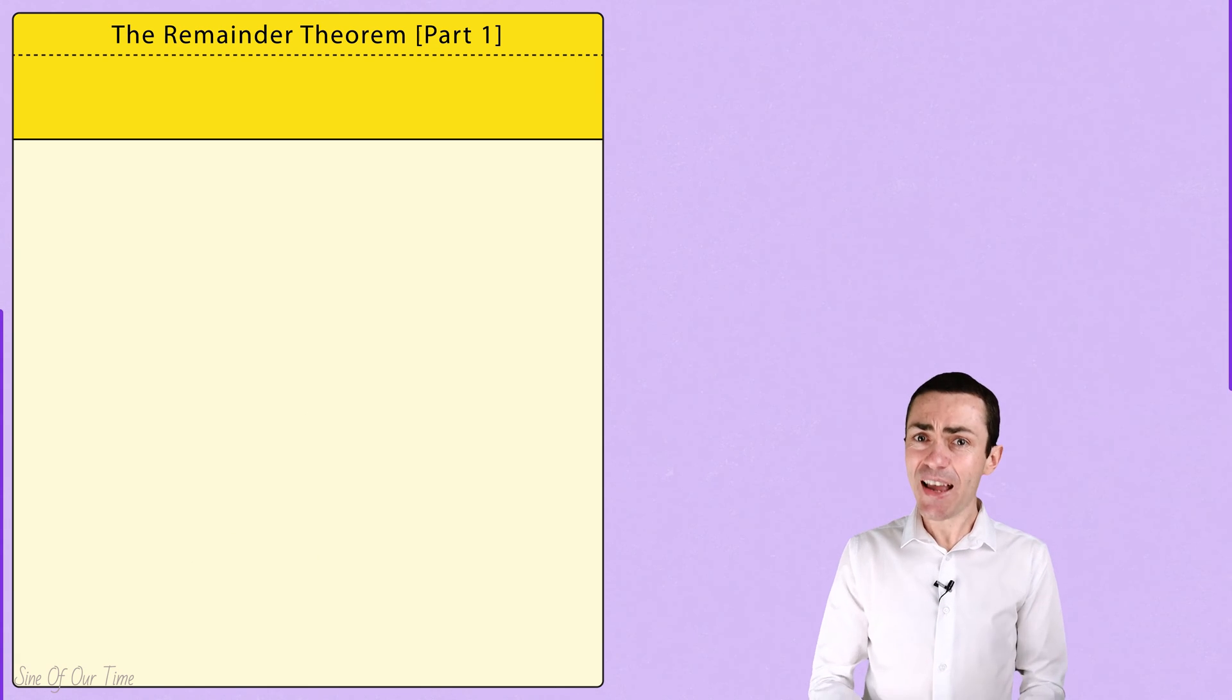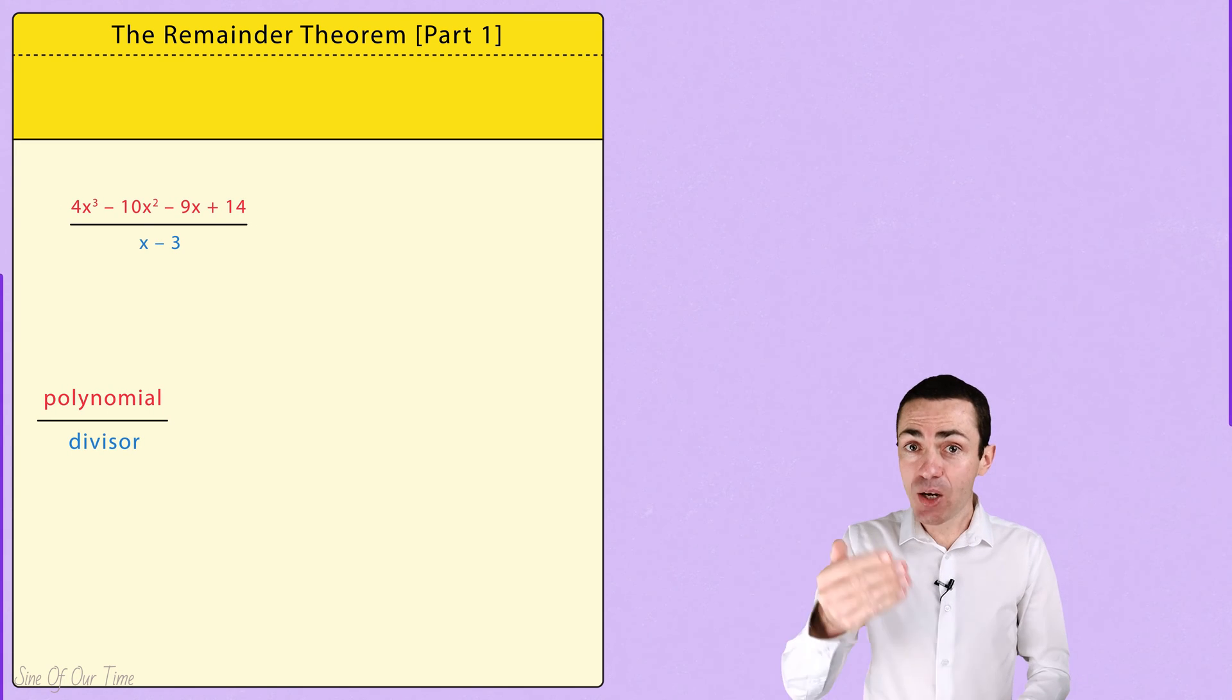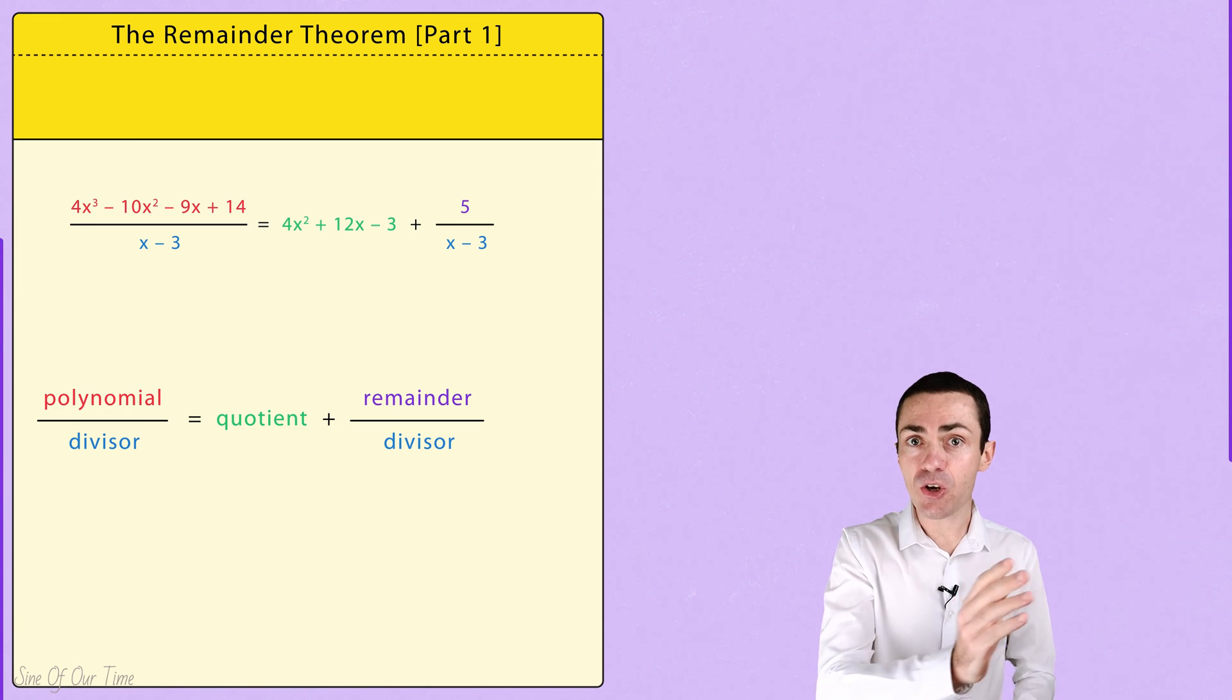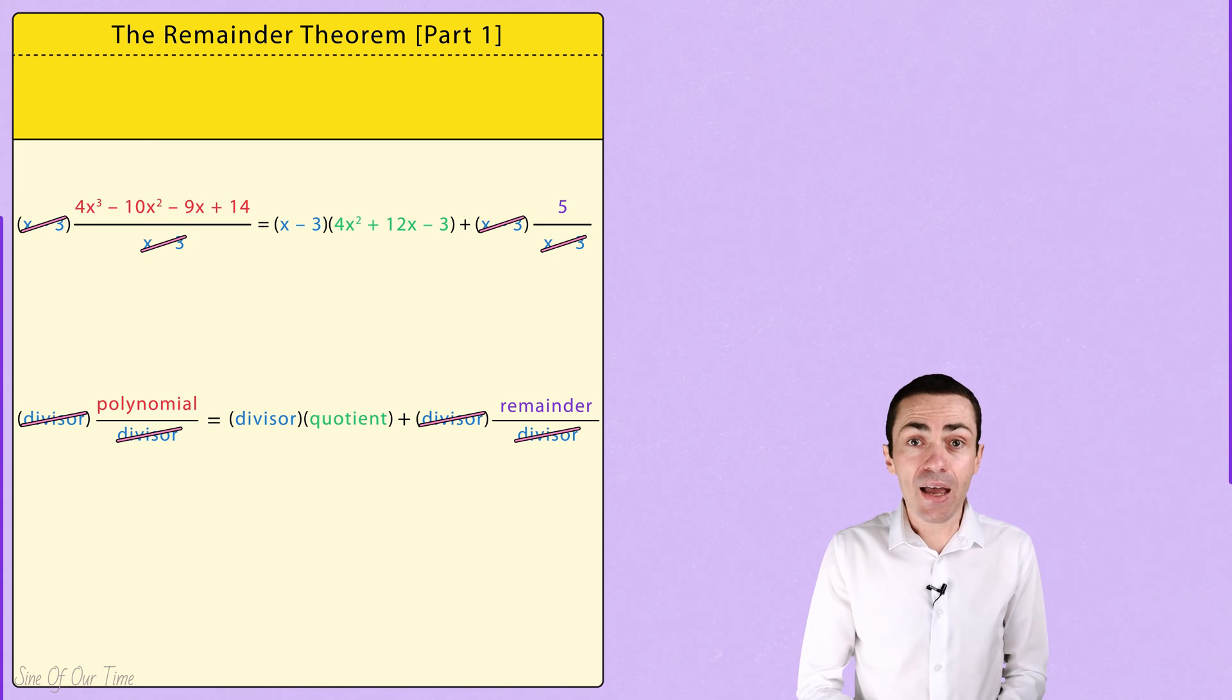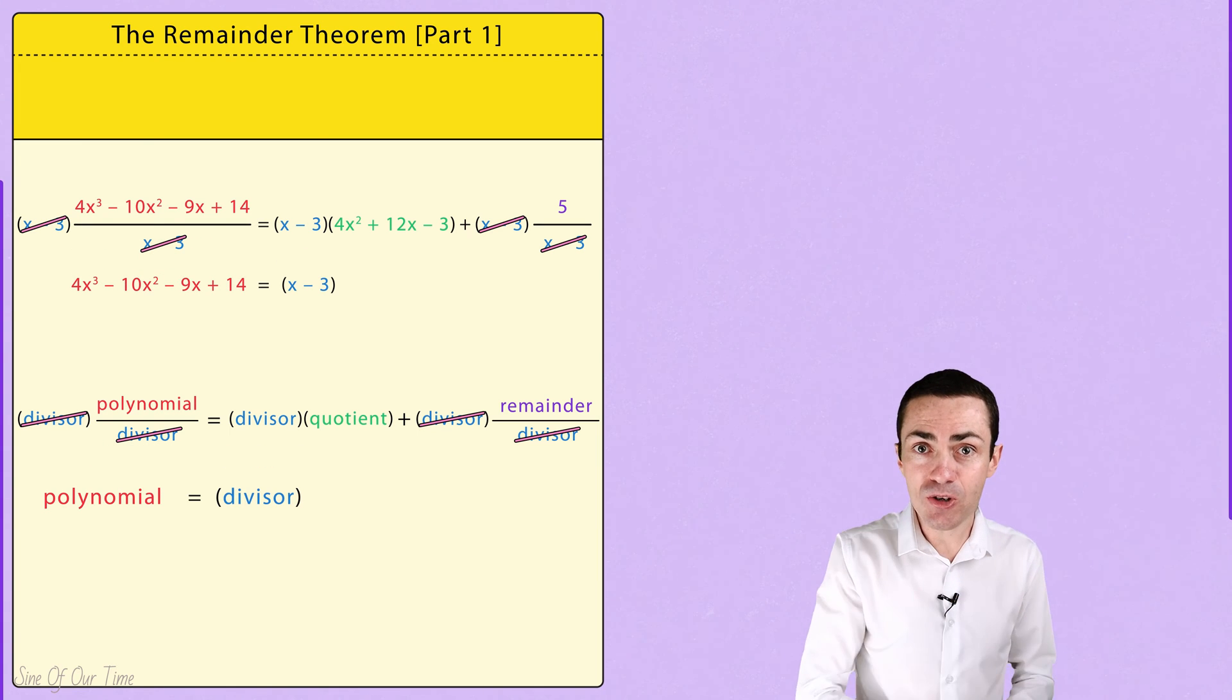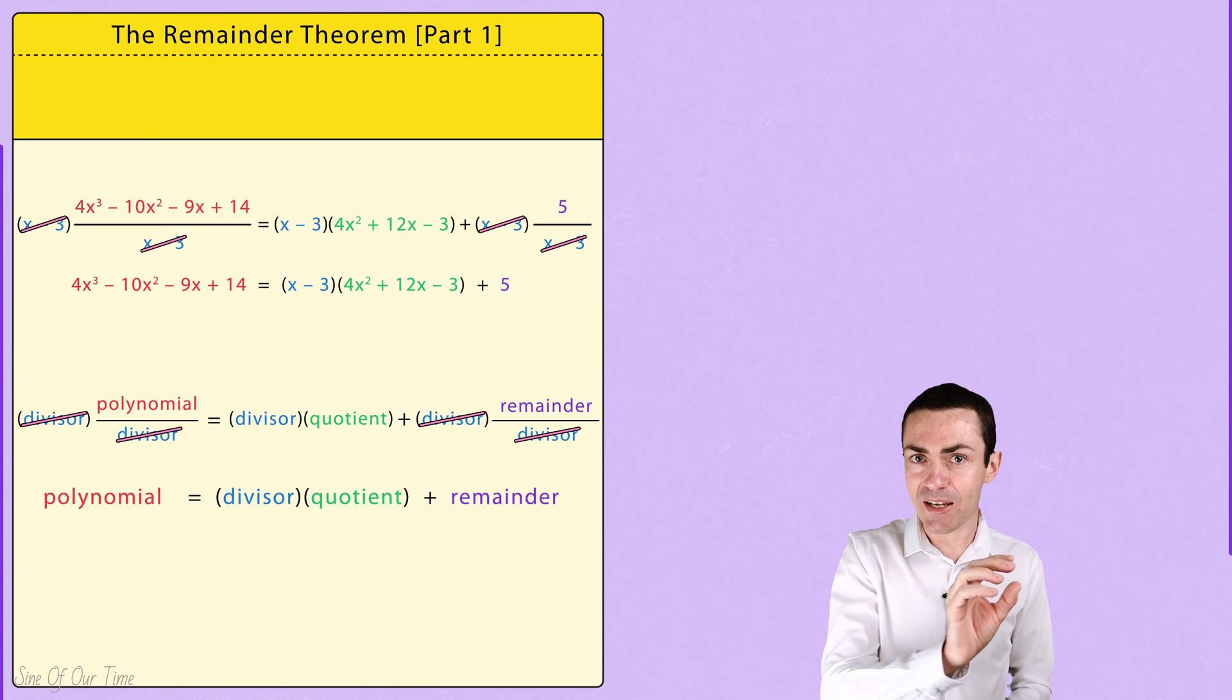Let's just take a minute to review what actually happens during polynomial division. When we take a polynomial and divide it by a divisor, we get a quotient plus a remainder over that divisor. We can write this in another way by multiplying each of those terms by the divisor. And when we do that, we ultimately come to the conclusion that a polynomial is the product of the divisor and quotient plus a remainder. In other words, a polynomial is equal to the divisor multiplied by the quotient plus the remainder.